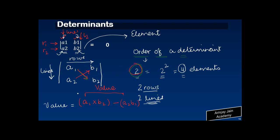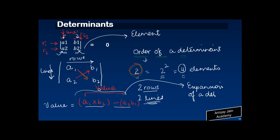This entire expression written on the right-hand side — A1·B2 minus A2·B1 — is known as the expansion of a determinant. Now let me give you a practical example of how to calculate the value of a determinant of order two.